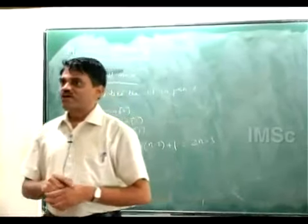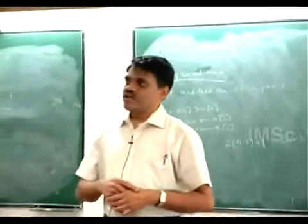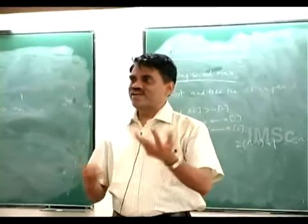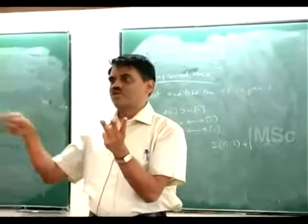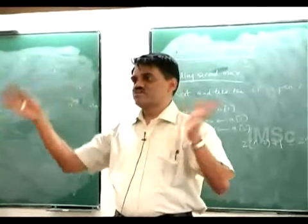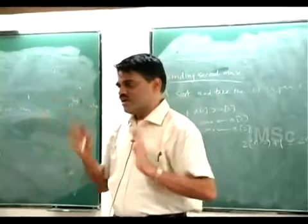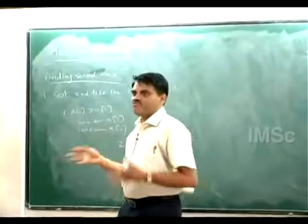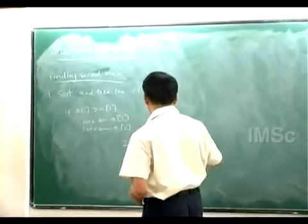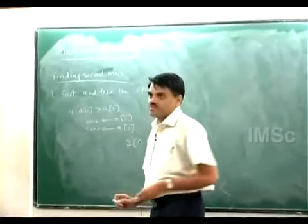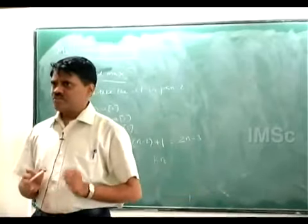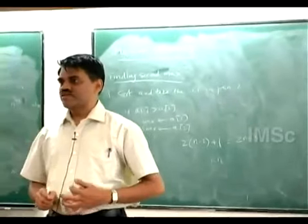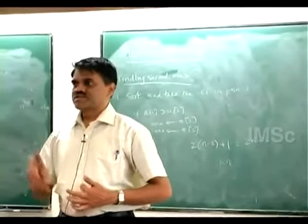Now if I want to find the third max, what do you do? Do the same thing — keep 3 elements, run through the loop, you end up with 3*(n-3)+1 and so on. So if I want the kth from the top, this algorithm would be something like k times n comparisons. So is that the best you can do? Can you do better? Let us go back to finding second max and see whether there is a better algorithm.